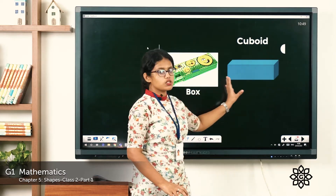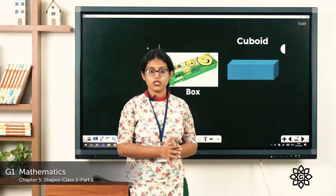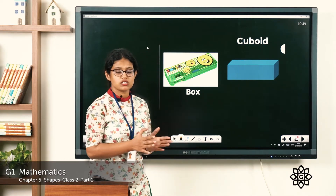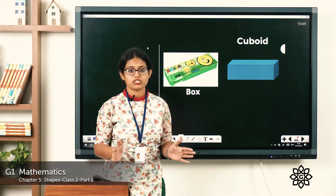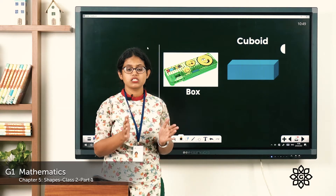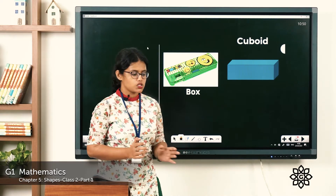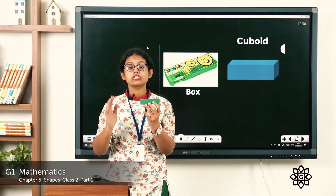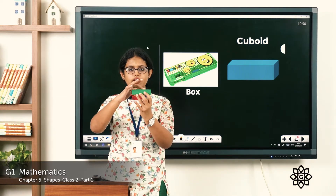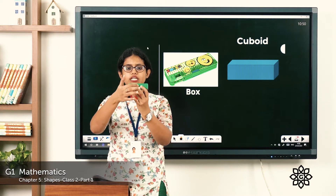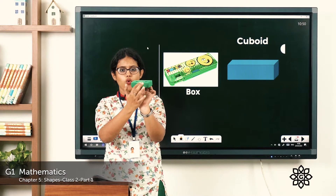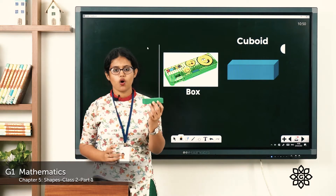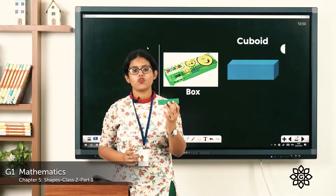What about this shape? Have you seen this shape anywhere? What about your pencil box? You all have a pencil box, right? So what shape is that? It is a cuboid. This is a cuboid and it also has six faces — one, two, three, four, five, six. So this is a cuboid and it has six faces.